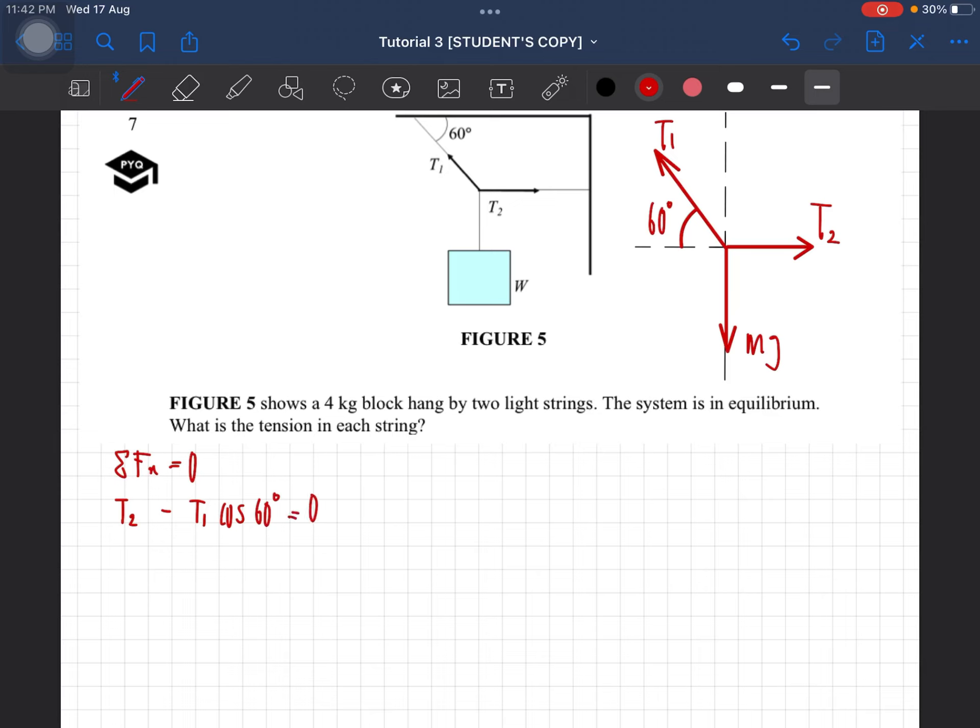So it will be minus T1 cos 60 degree equal to 0. So in this case, T2 will be equal to T1 cos 60 degree. So this is our first equation.